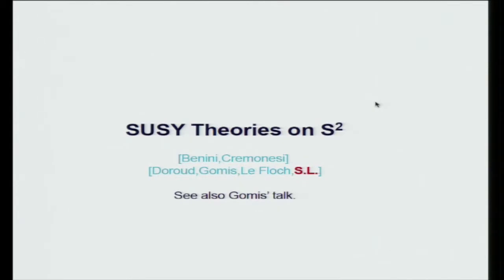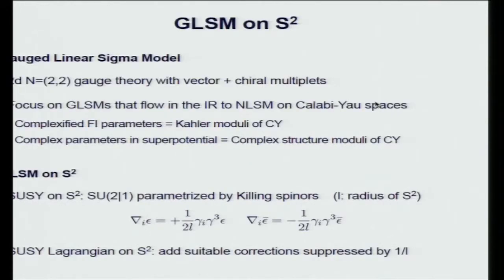Before that, let me quickly go through the two-sphere partition functions. Today I mainly discuss the gauge linear sigma model, which is a two-dimensional supersymmetric gauge theory involving vector and chiral multiplets. In particular, I focus on the gauge linear sigma model that flows to the nonlinear sigma model in Calabi-Yau space. In this approach, the Kähler moduli of the Calabi-Yau space are realized as the complexified FI parameters, and the complex structure moduli are realized as parameters in the superpotential.